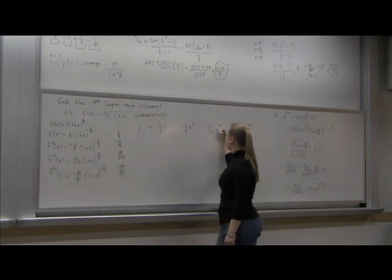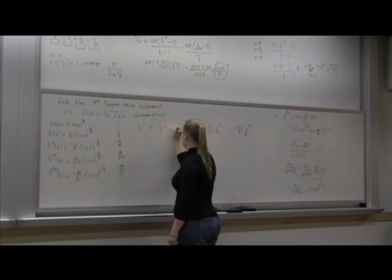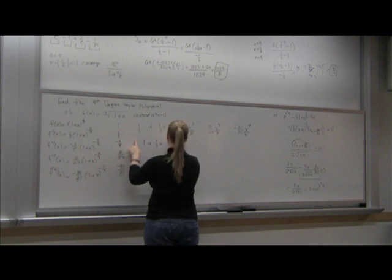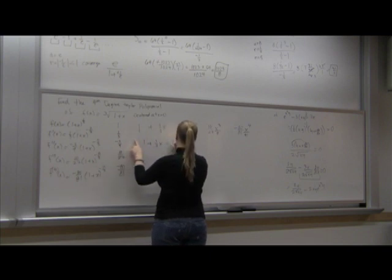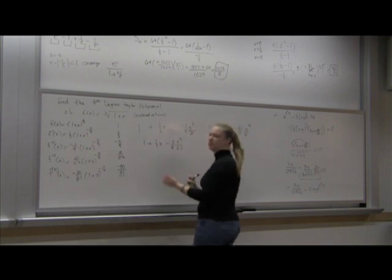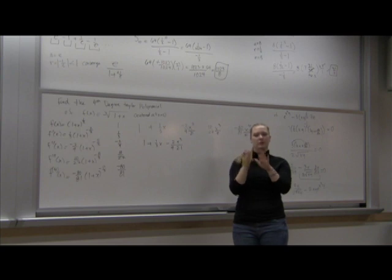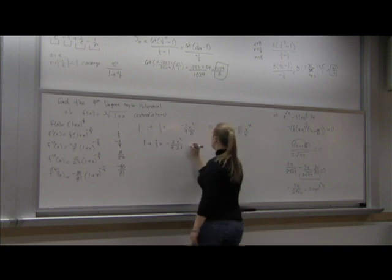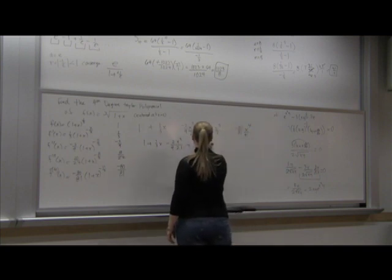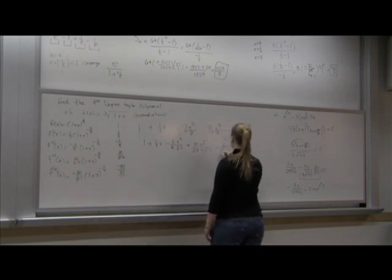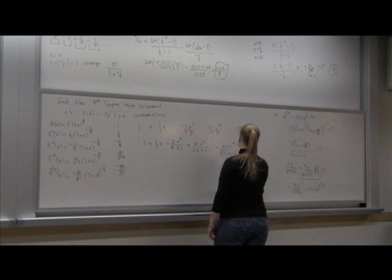The factorial is the exclamation mark thing, and I'll explain what it means in a sec. Are you guys feeling okay about this test? So this is going to be one plus one third x minus two x squared over nine. Two factorial just means two times one. You take that number and you multiply it by every whole number less than it until you get to one. Plus ten x cubed over twenty-seven times three times two times one, minus eighty x to the fourth over eighty-one times four times three times two times one.